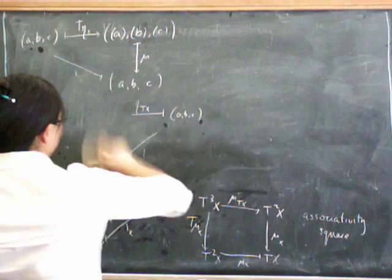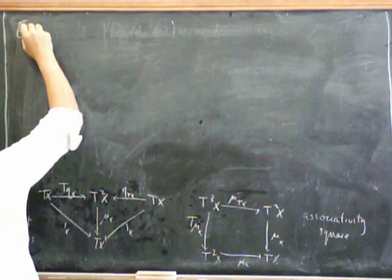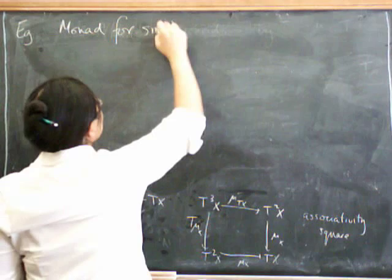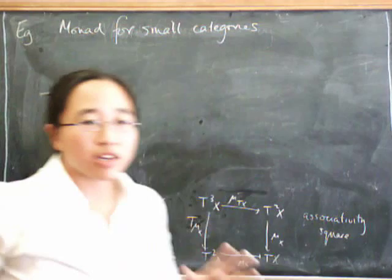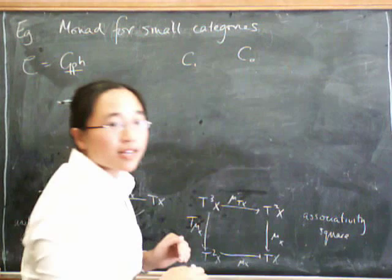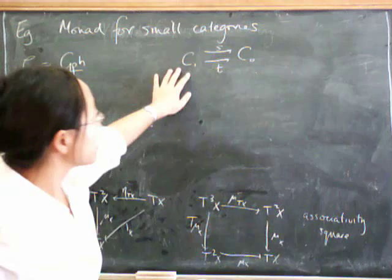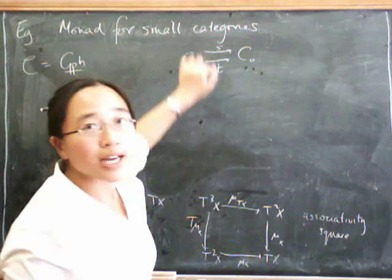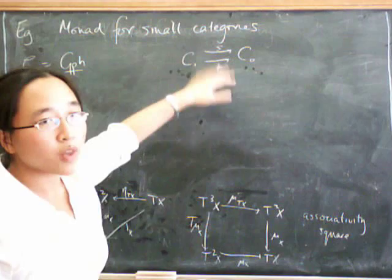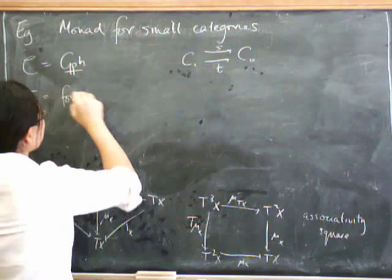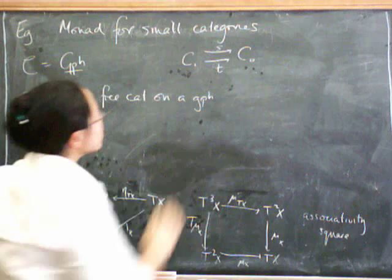We can also do this for small categories. Yes, there is a monad for small categories. So the next example is monad for small categories. Now what category are we working in here for our monad? C is going to be the category of graphs. What's a graph? Well, a graph consists of a set C1 and a set C0 together with functions which I'll call S and T. Because for us, of course, this is the set of morphisms and this is going to be the set of objects. And this is telling us that every morphism has a source and a target. So that's an object of graph. And the morphisms in graph are the obvious kinds of commutative diagrams. So now T takes the free category on this graph.